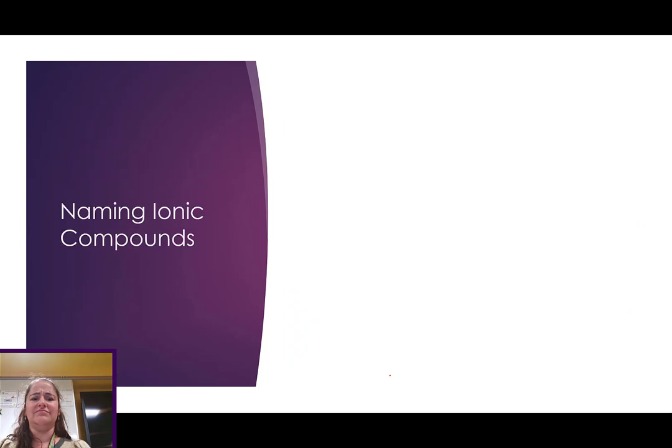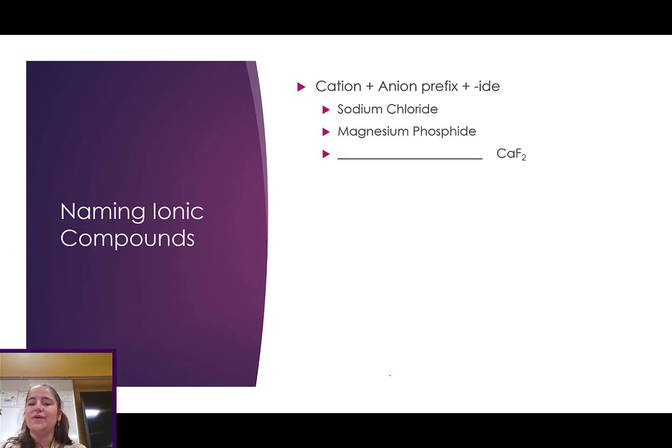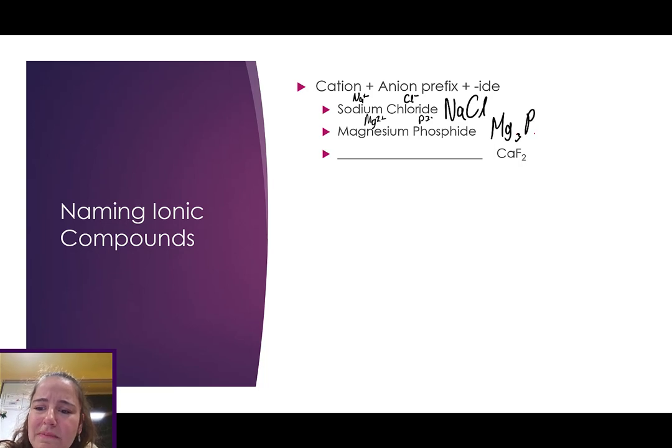So, what would we call that? How do we name them? Well, it's pretty easy for most of them. It's the cation and the anion prefix plus I-D-E. So, sodium chloride means a sodium ion, which is Na+, bonded to a chlorine ion, which is Cl-. So, that would just be NaCl. Magnesium phosphide means a magnesium ion bonded to a phosphorus ion, which is P3-. So, if we have a 2+ and a 3-, that formula will end up being Mg3P2. And if we have calcium bonded to fluorine, we would call it calcium fluoride.